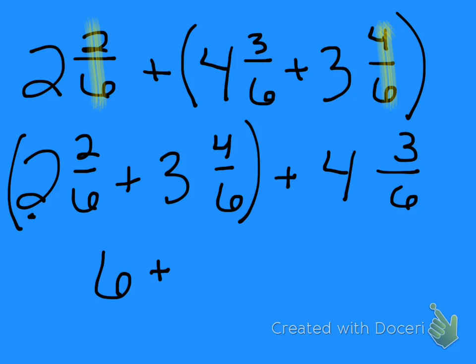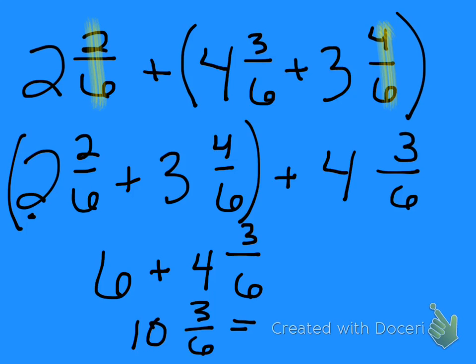Plus my 4 and 3/6 gets me 10 and 3/6. Students, do you see anything about the fraction that we could do? Yes, we could simplify. So you'll have 10, and then 3 goes into 3 and 6 — it's a common factor. So 3 divided by 3 is 1, and 6 divided by 3 is 2, giving a final answer of 10 and 1/2.